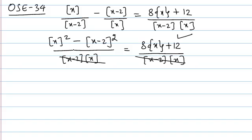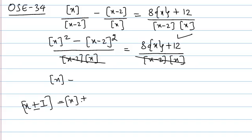We can simplify it further using a very common step: if inside the greatest integer function we have x plus or minus an integer, we can write it as greatest integer of x and bring the integer out from the greatest integer sign.